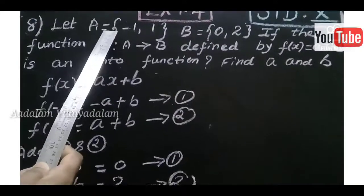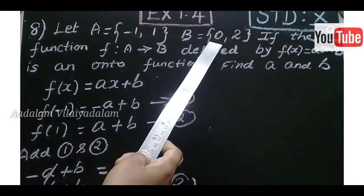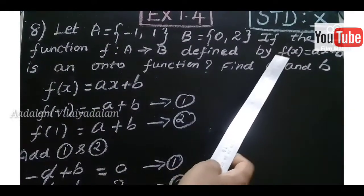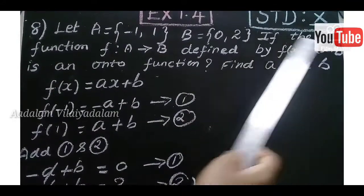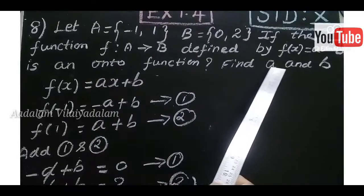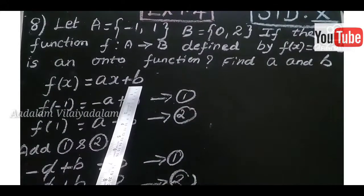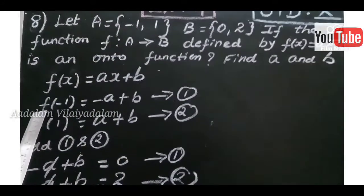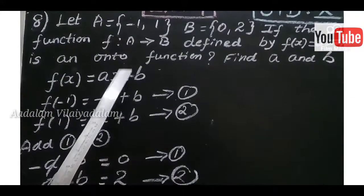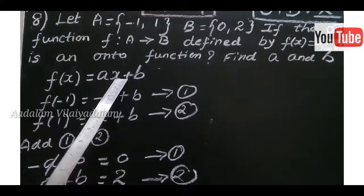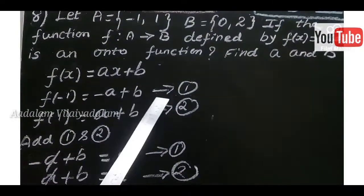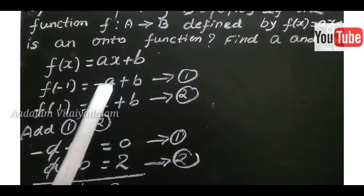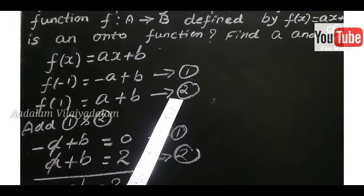Next question: Let A equal to {minus 1, 1}, B equal to {0, 2}. If the function F such that A tends to B defined by F of X equal to AX plus B is an onto function, find A and B. F of X value is given as AX plus B. Now we substitute X equal to minus 1: F of minus 1 equals minus A plus B. This is equation number 1. Next, substituting X equal to plus 1: A plus B equals — this is equation number 2.